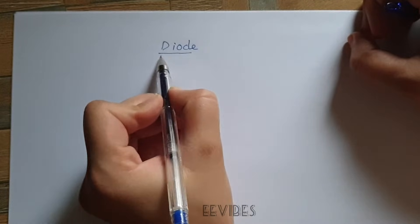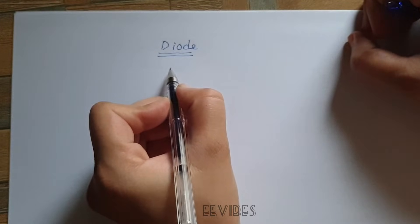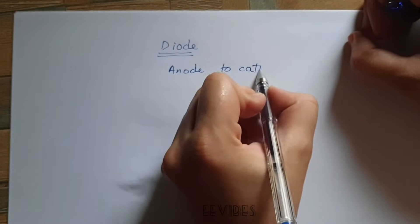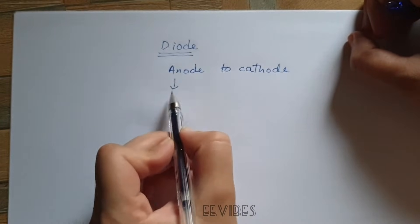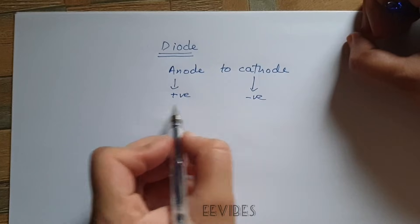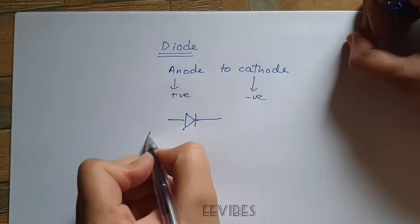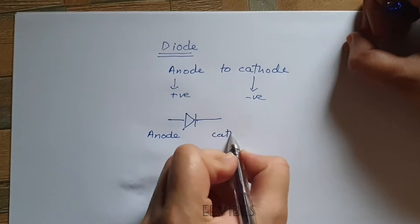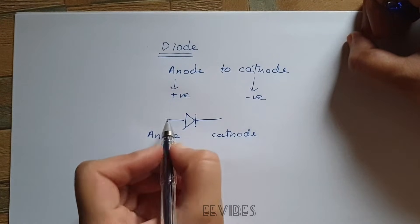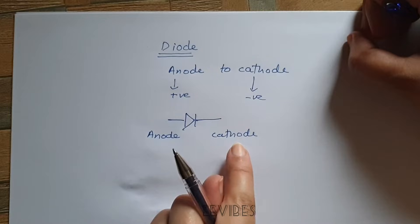A diode is an electronic device which allows current to flow in only one direction — current can flow only from anode to cathode, where the anode is the positive terminal and the cathode is the negative terminal. Whenever we want current to flow in a circuit, we must ensure the anode is at a higher potential compared to the cathode. If there is more potential at the anode terminal than at the cathode terminal, then current can flow through the diode.